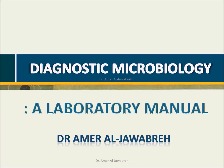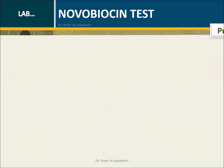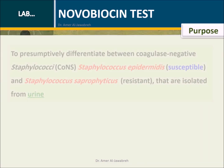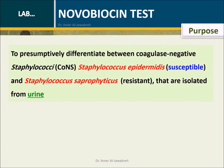Diagnostic Microbiology, a laboratory manual. Purpose: to presumptively differentiate between coagulase-negative staphylococci — Staphylococcus epidermidis and Staphylococcus saprophyticus — that are isolated from urine.